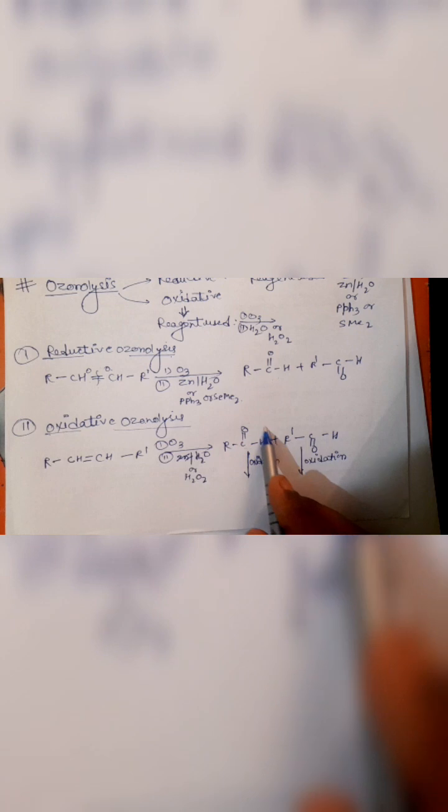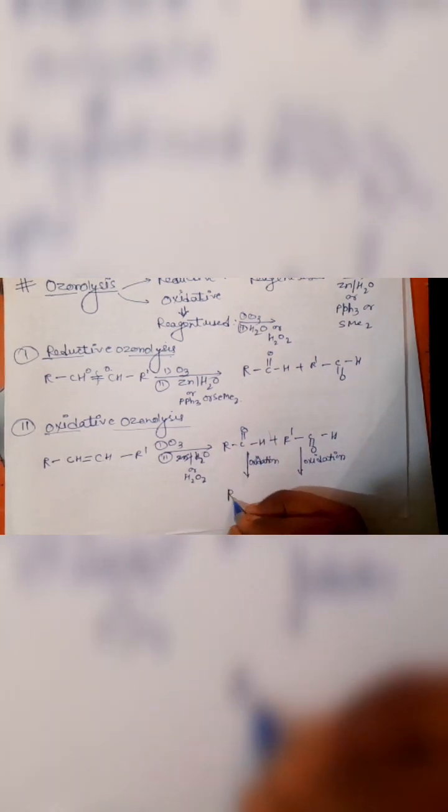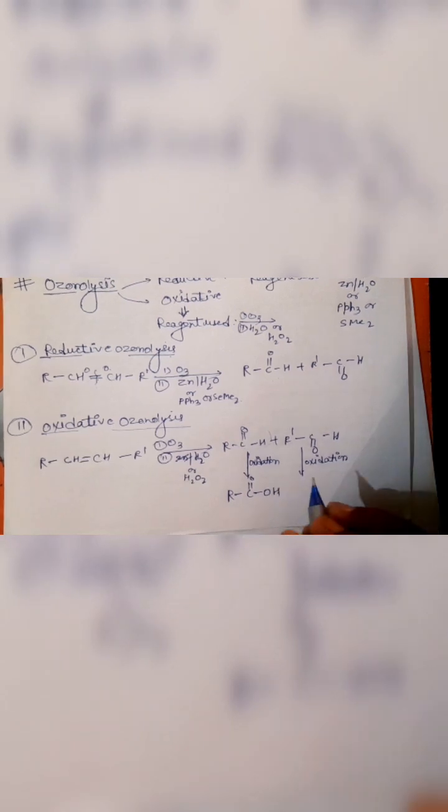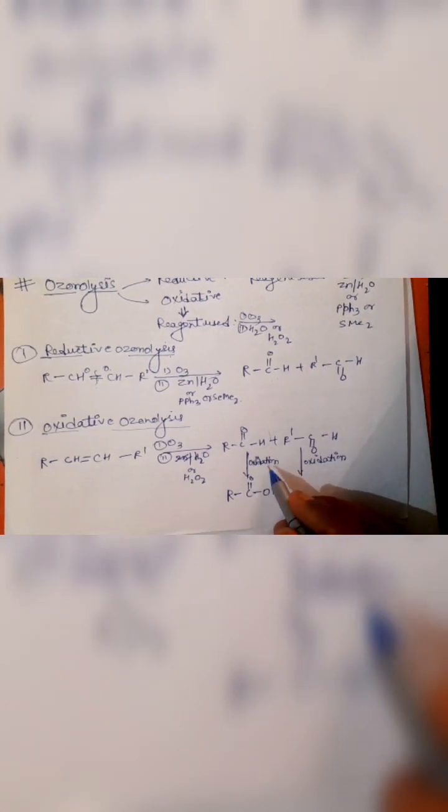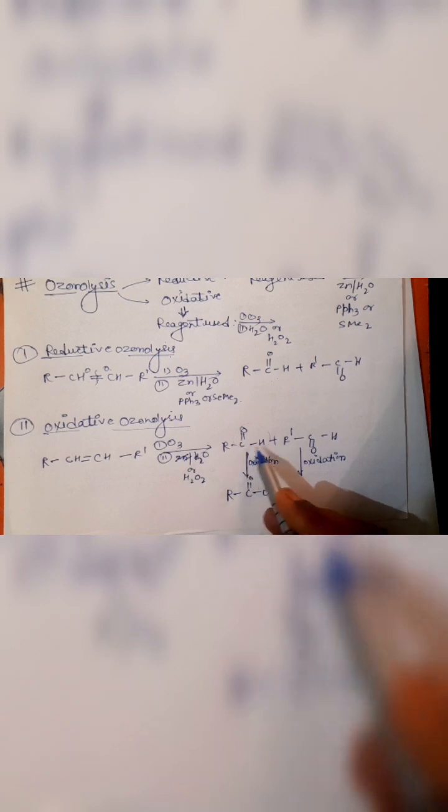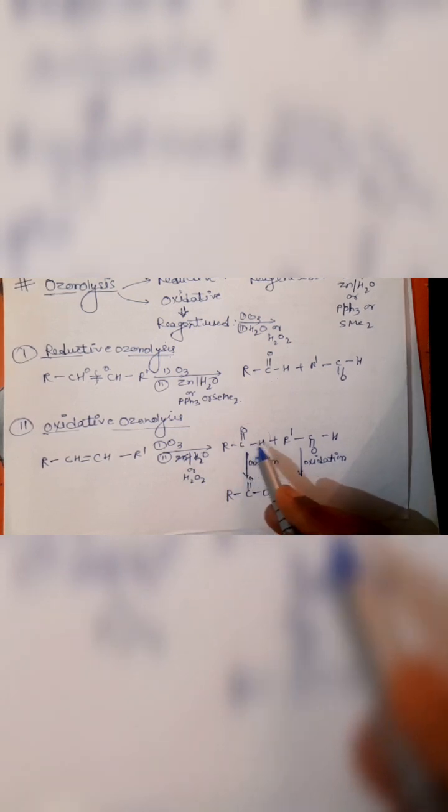The oxidation of aldehyde gives acid. Oxidation is the addition of oxygen between the carbon atom and the hydrogen atom directly connected. So we get R-COOH and R'-COOH. Acids are formed. So in oxidative ozonolysis, a pair of acids are formed. In reductive ozonolysis, a pair of aldehydes are formed.